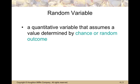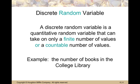The first thing we ought to do is define a random variable. A random variable is a quantitative variable, something that's measured, that assumes a value determined by chance or random outcome. A discrete random variable is a quantitative random variable that can take on only a finite number of values or a countable number of values. Like the number of books in a college library, they can have 522 or 523, but nothing in between.